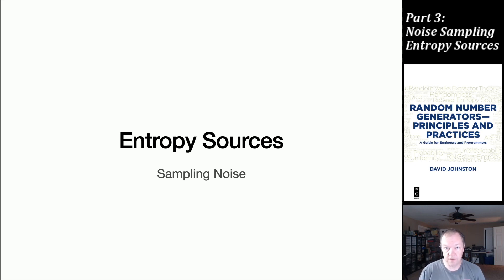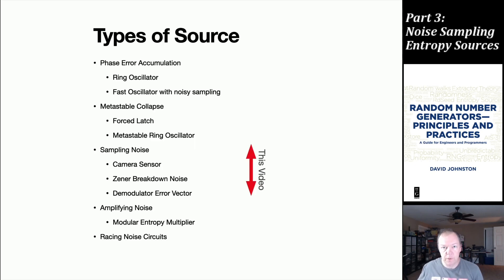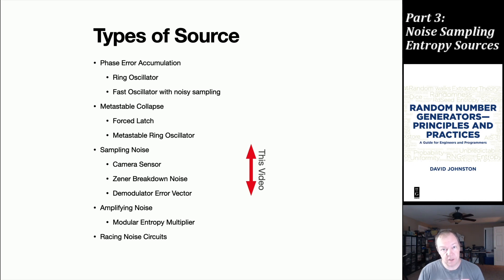There are sources of noise in the environment, and you can take that noise, amplify it, sample it, and turn it into bits to get random data. We're going to look at some variations. The three primary types are using a camera sensor, a zener diode, and as a variation of that, a normal diode in a transistor. And if you have a radio — say a cell phone or other radio circuit — you can use the error vector from a demodulator.